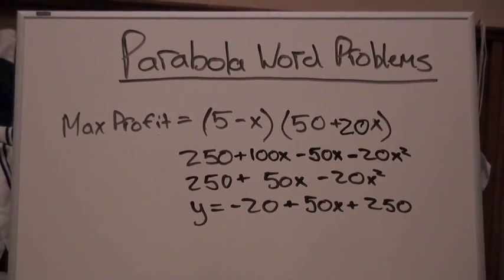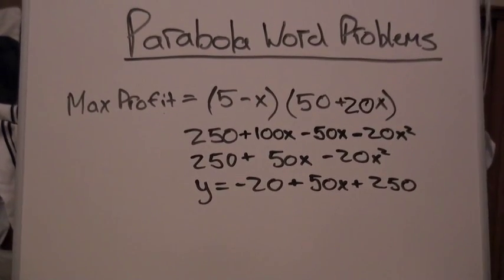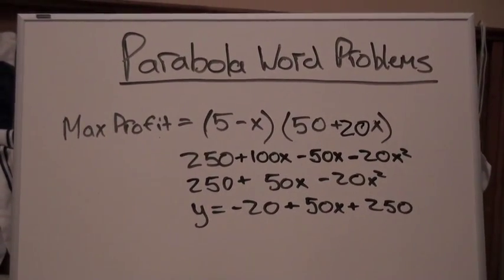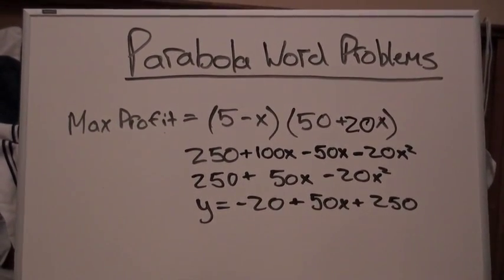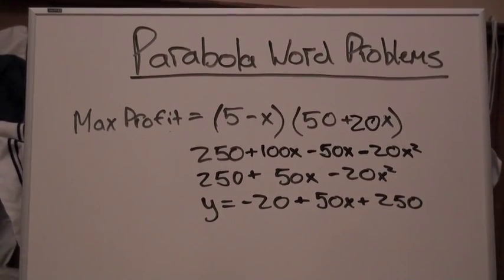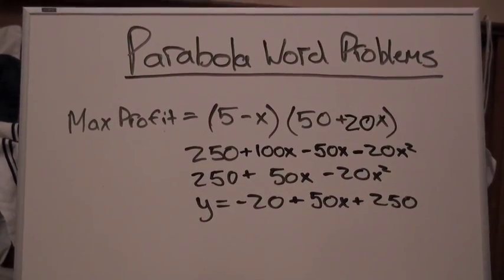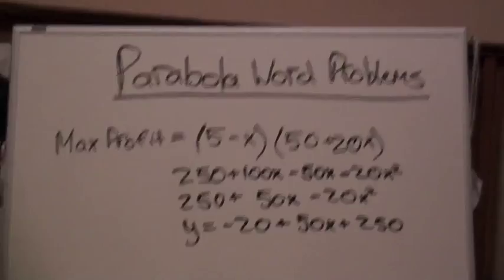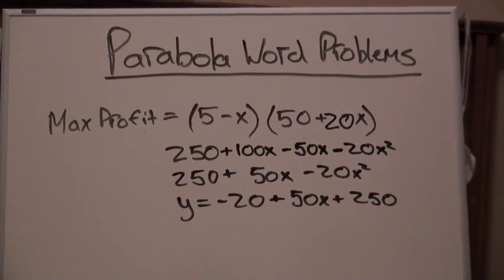Now, to show you how to do this problem completely out, I changed the number of customers Ethan will gain if he changes his banana price by $1. In this scenario, if Ethan reduces his price by $1, he will gain 20 customers.